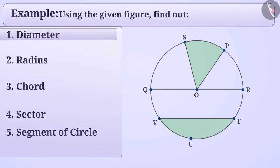We know that a line segment that connects 2 points on the circle and passes through the centre of the circle and divides the circle into 2 equal parts is called diameter. In this circle, QR is the diameter.